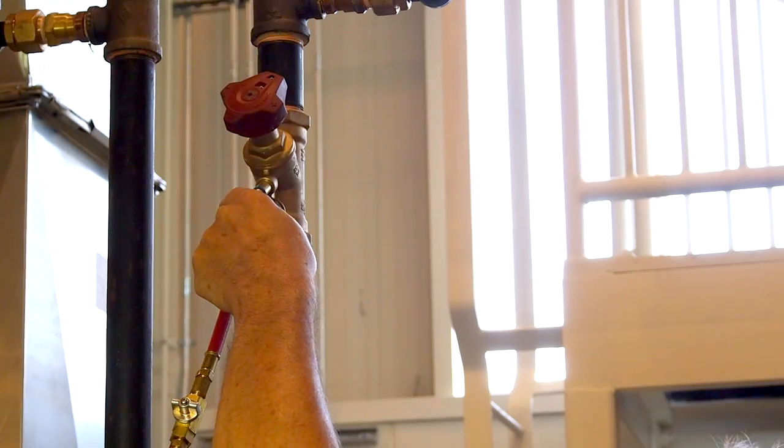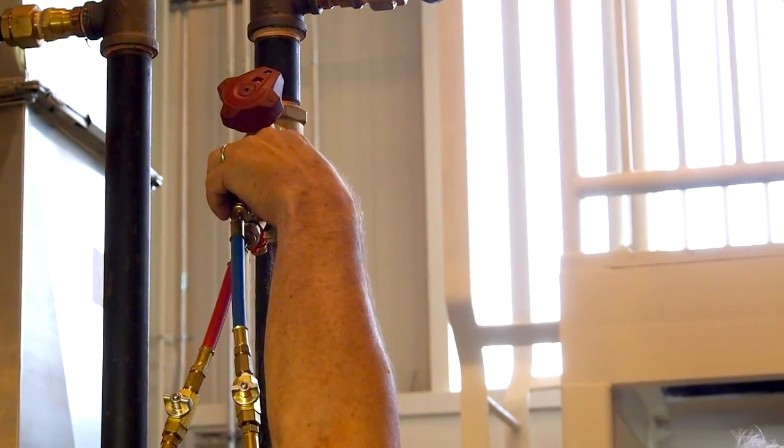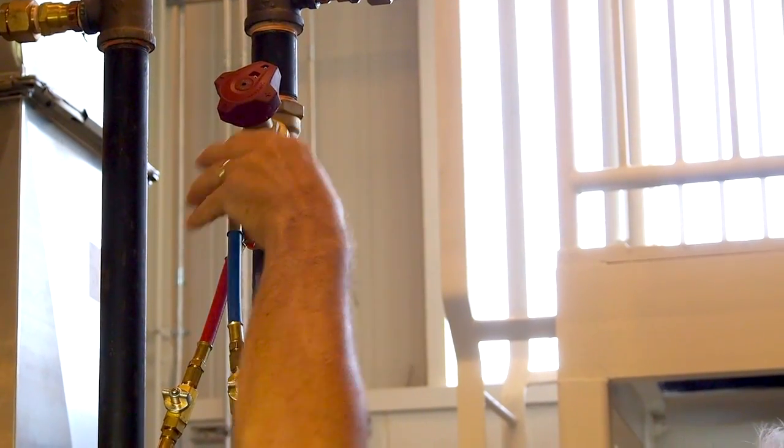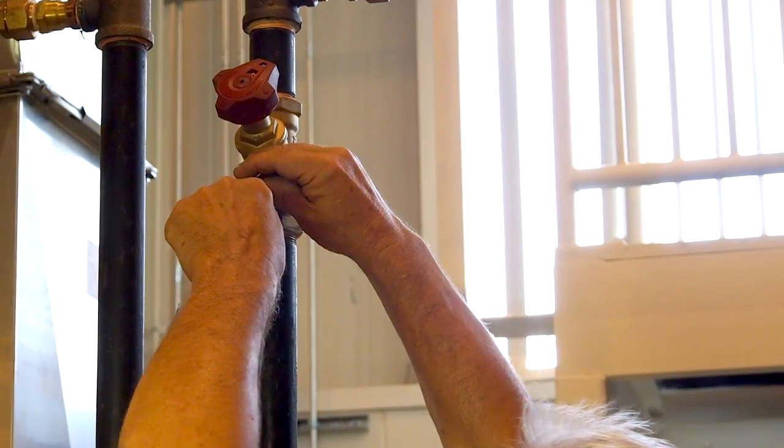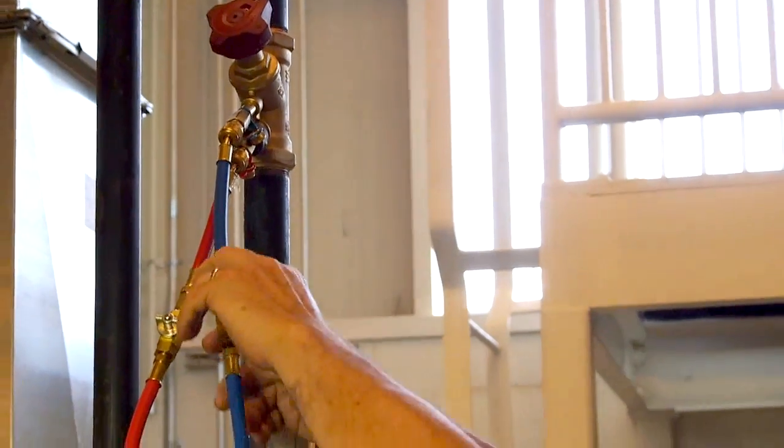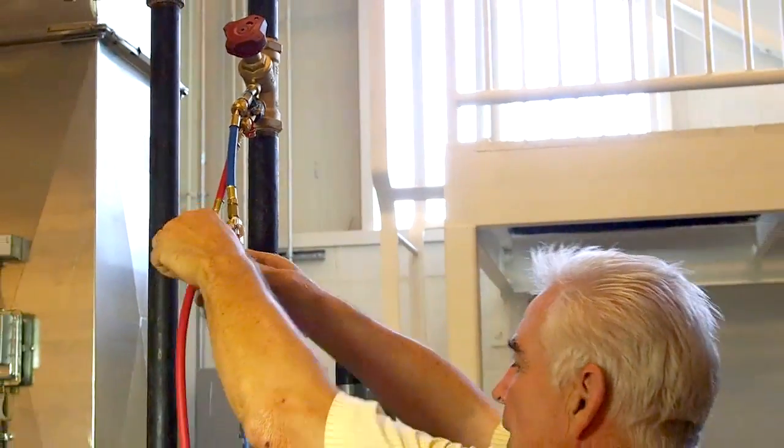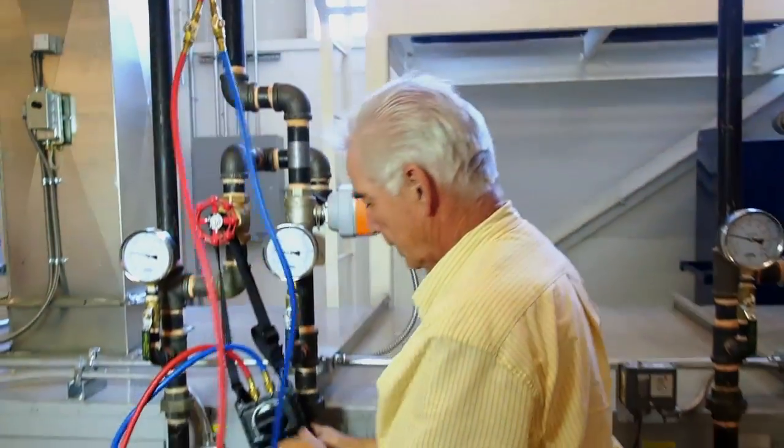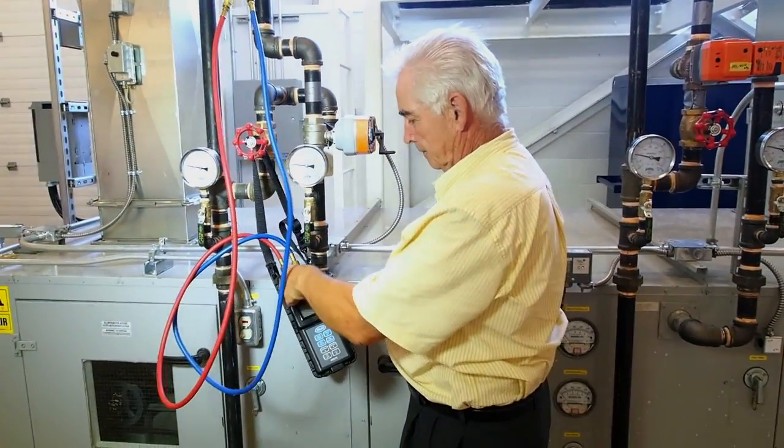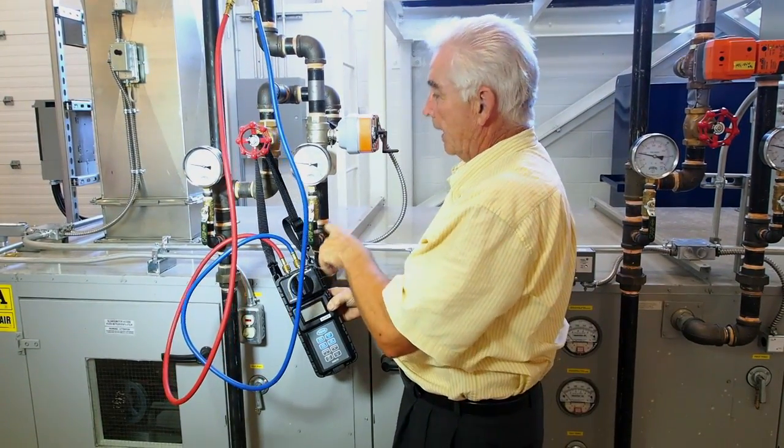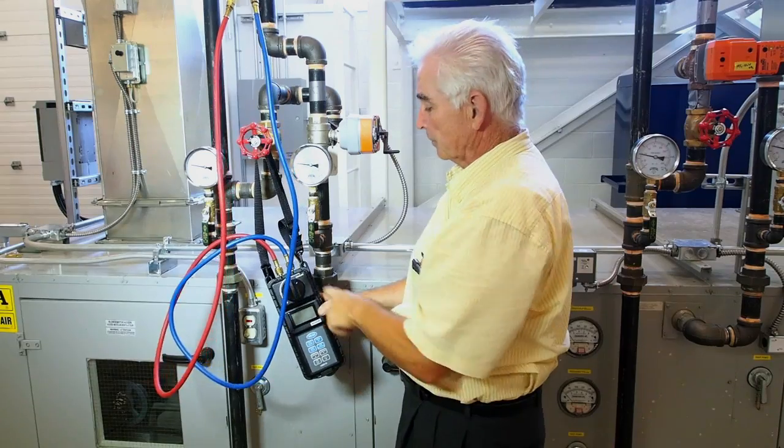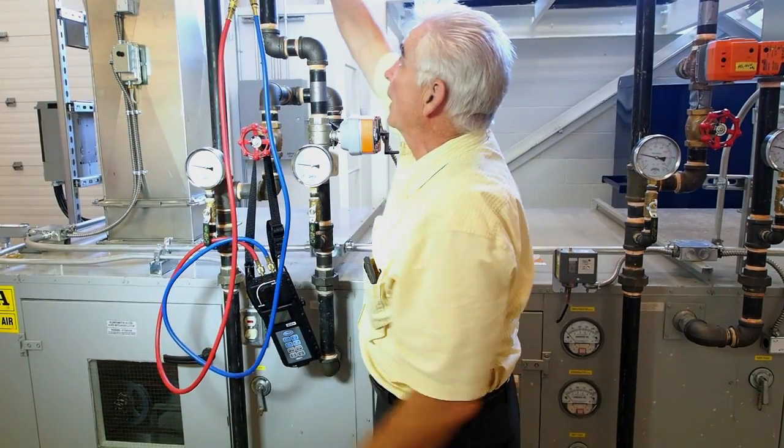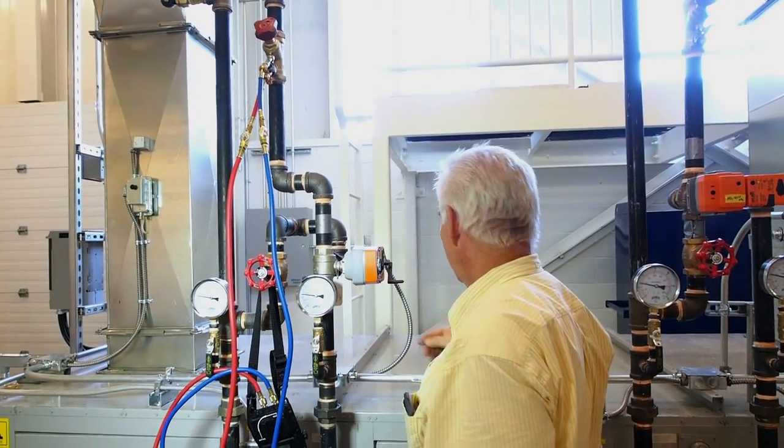They always drip a little bit. So you open these, you've got it set on bypass, and then you turn it to measure and it records the differential pressure across this circuit balancing valve.